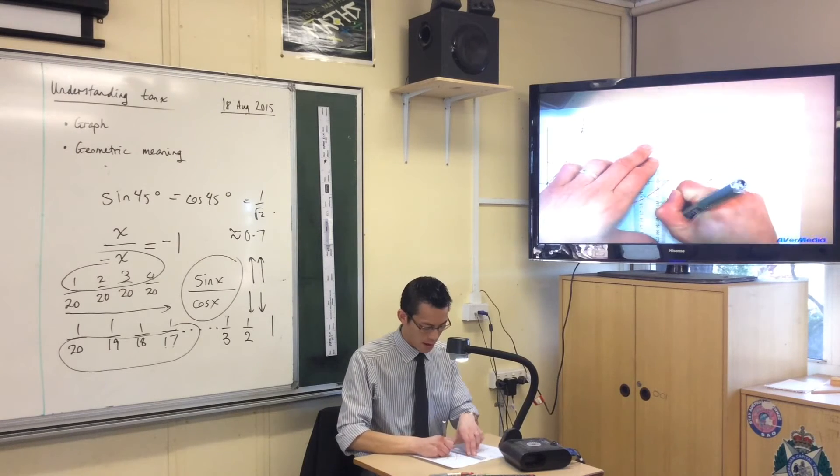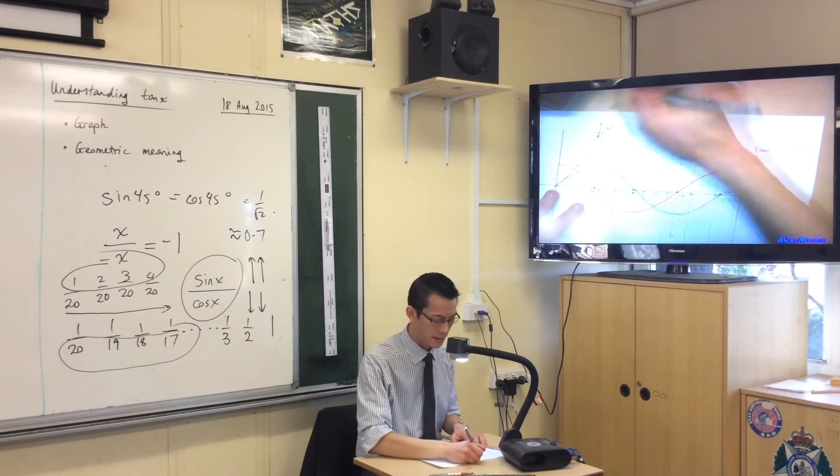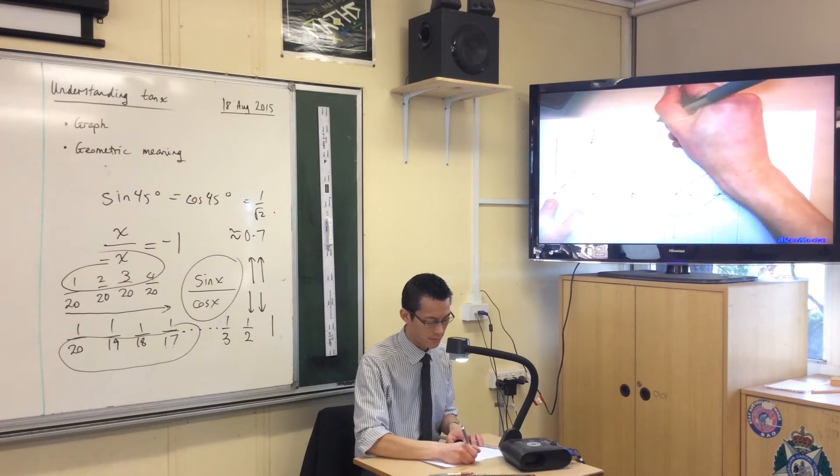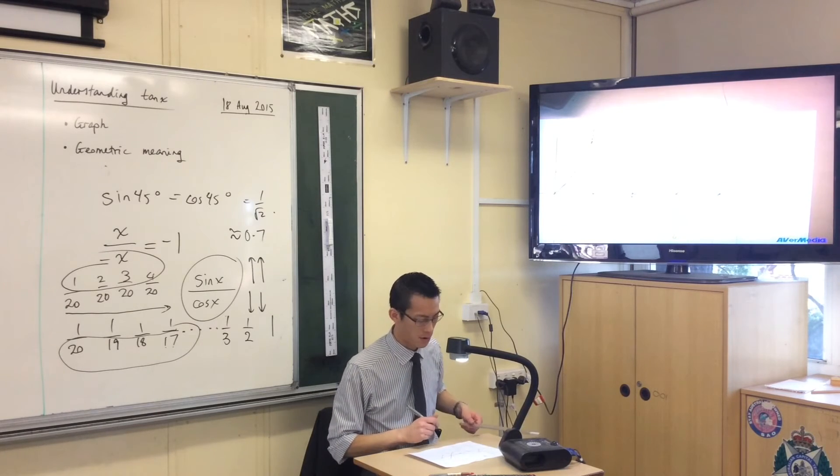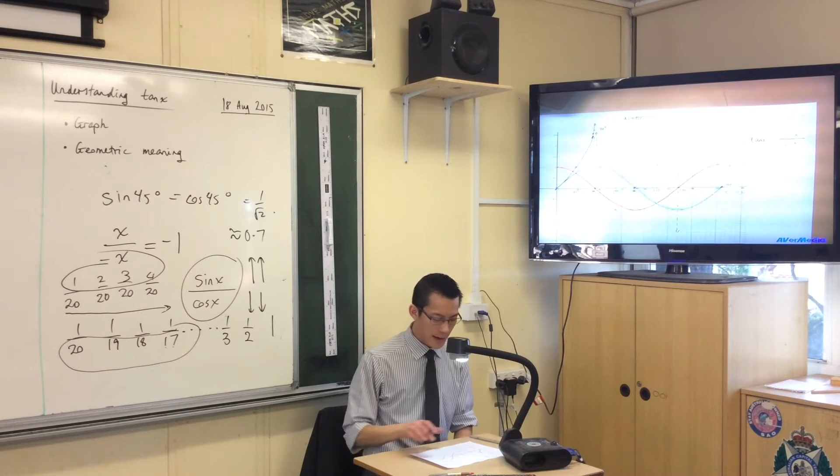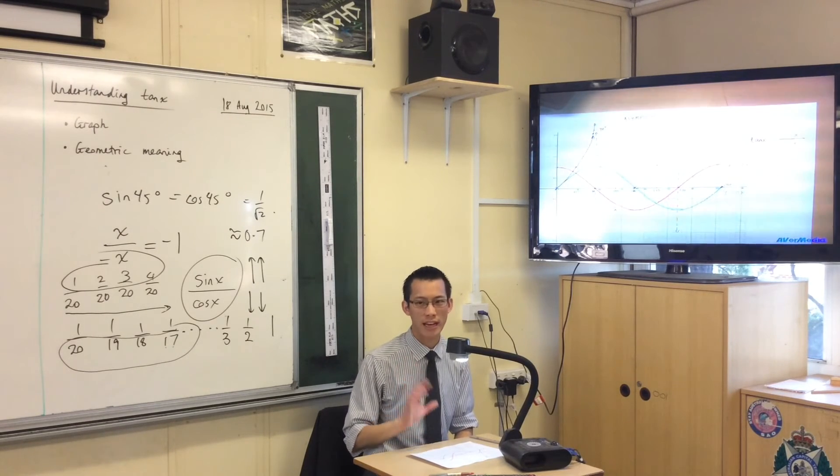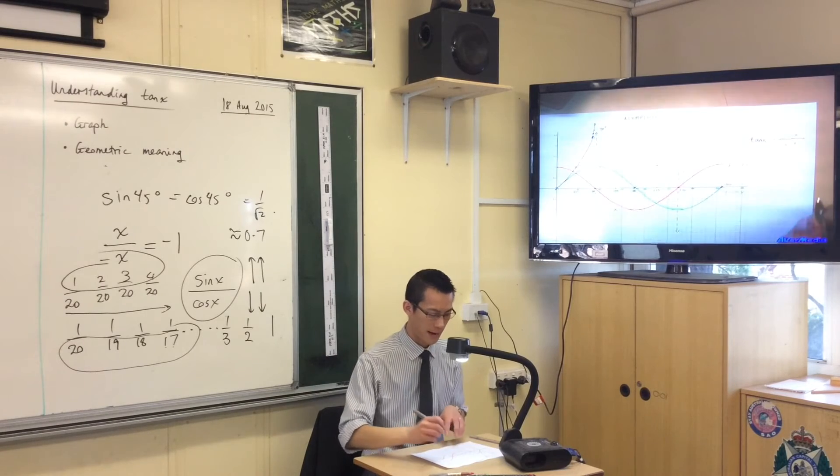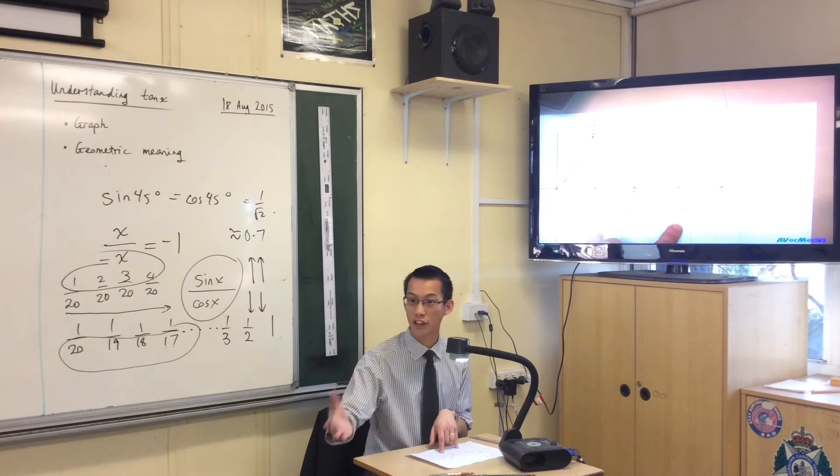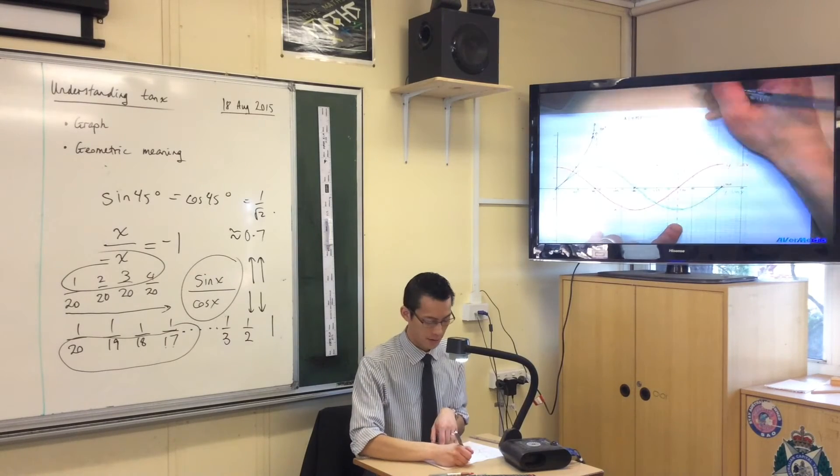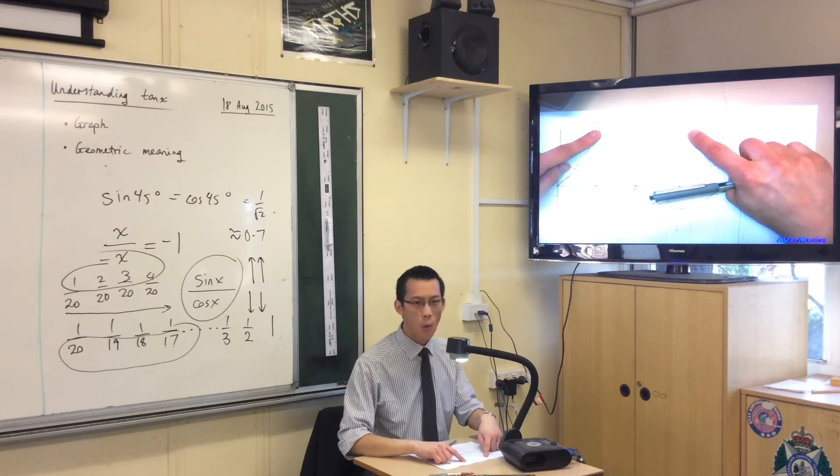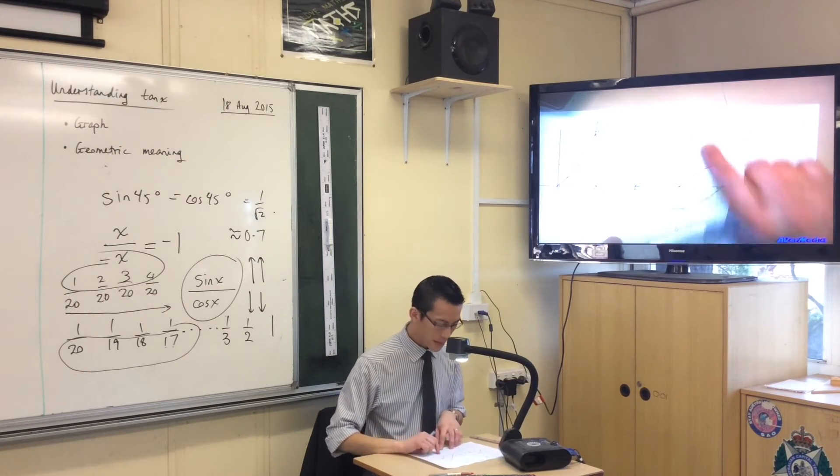I'm going to tell you what the name of these things are now. These things are called - big fancy name, can you read that? - asymptotes. There's a silent P right there in the middle: asymptotes. These are lines that the graph approaches and gets closer and closer and closer to. The equation of this one is again an x equals something, whatever it goes through, and that's 270 degrees. X equals 90 degrees, x equals 270. Those are the equations of our asymptotes.